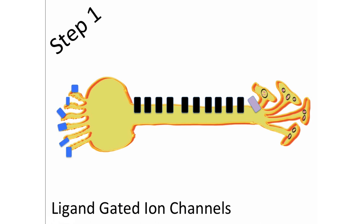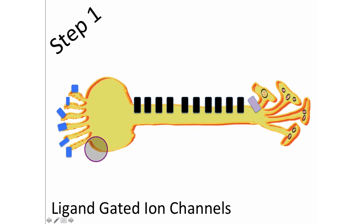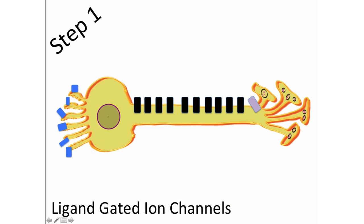So how do we get that initial depolarization or graded potential in the cell body? That's the role of the dendrites, specifically the ligand-gated ion channels within the dendrites — drawn here in blue. There are probably hundreds on each dendrite, and some may be directly on the plasma membrane of the cell body. When these ligand-gated ion channels open, they allow for the influx of sodium to depolarize the cell body and hopefully reach threshold at the axon hillock where the first voltage-gated sodium channel is located.